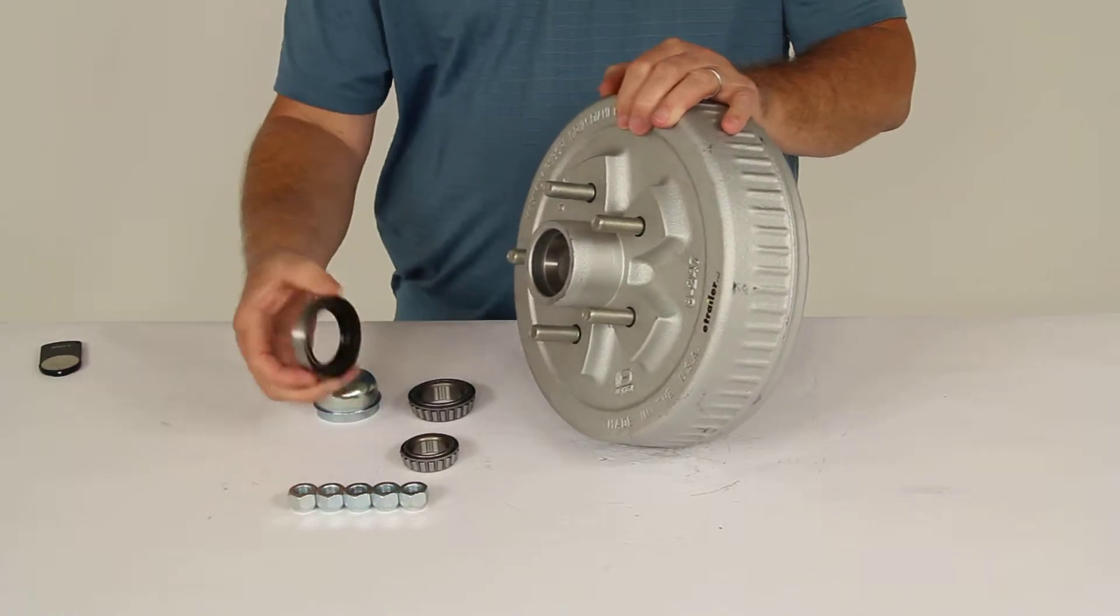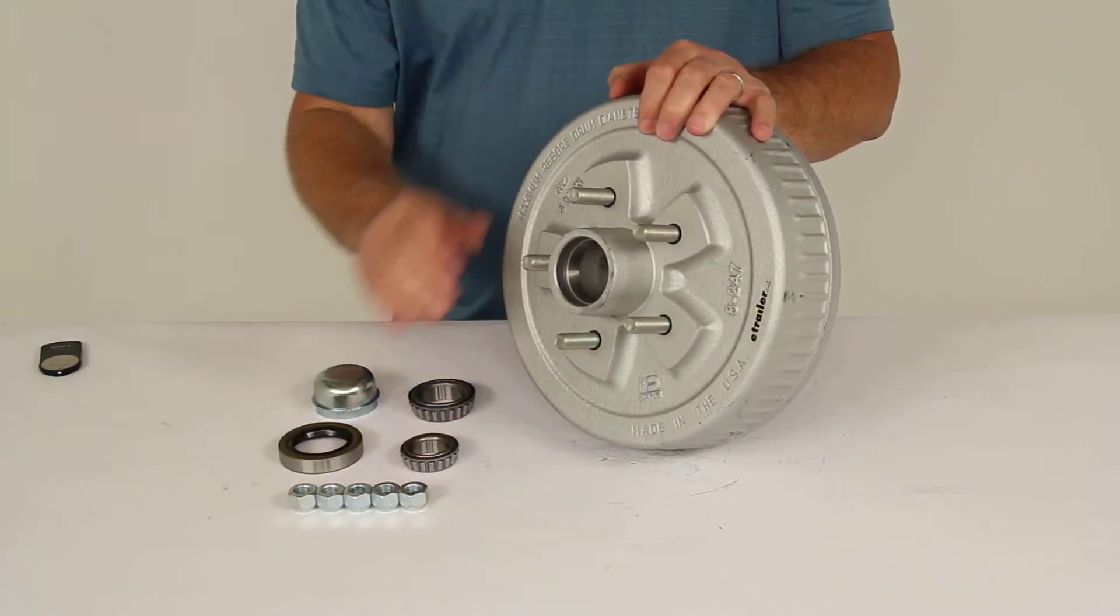It includes the double-lip grease seal, this grease cap, and then the lug nuts.